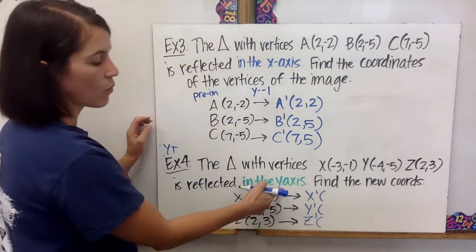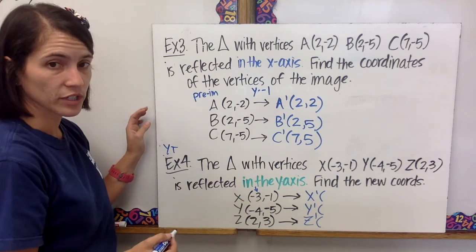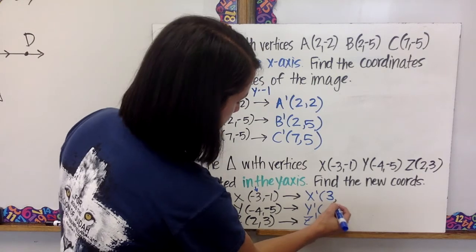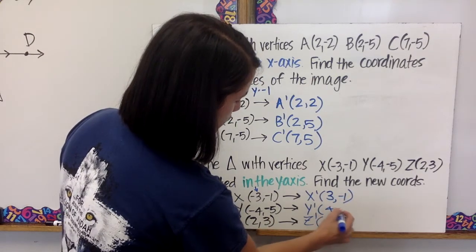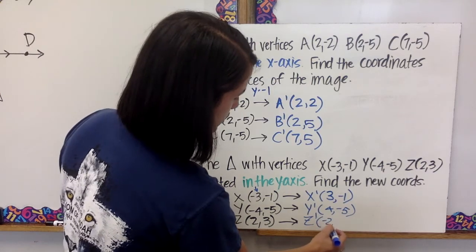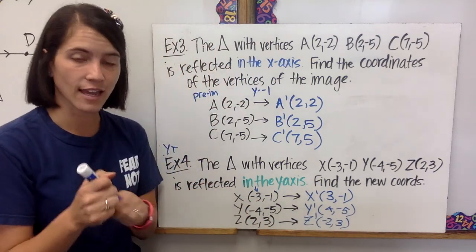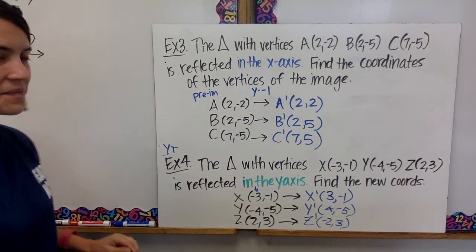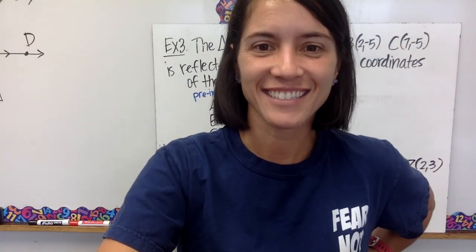Because it's the y-axis, we need to multiply the x-coordinate by negative 1, so it's going to make all the x-values the opposite: (3, negative 1), (4, negative 5), and (negative 2, 3). The y-coordinate stays the same, and you multiply the x-coordinate by negative 1. We will practice more with reflections in class.